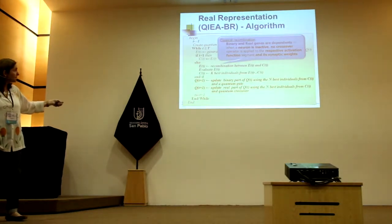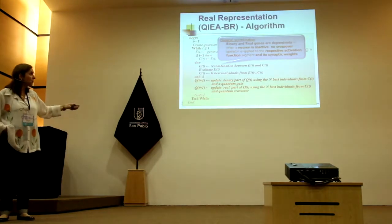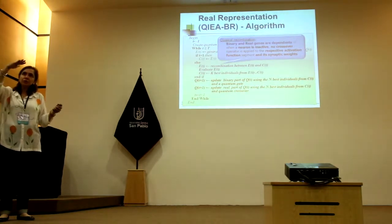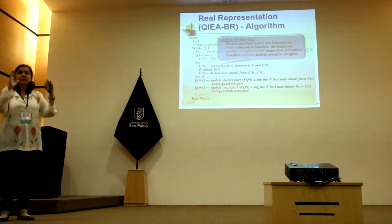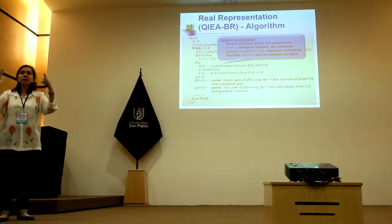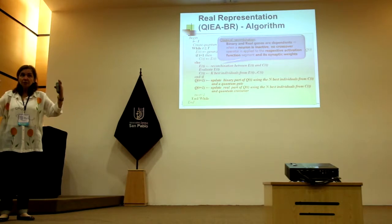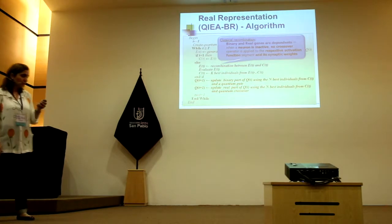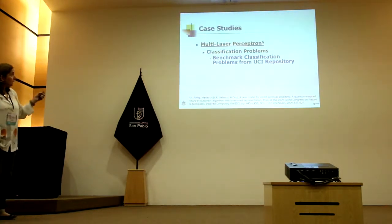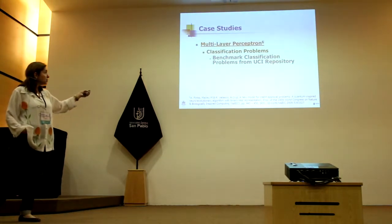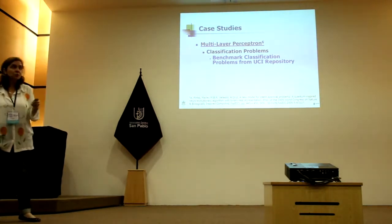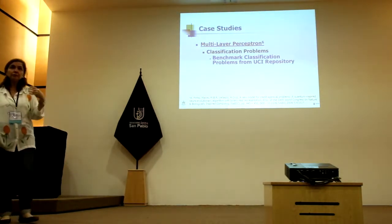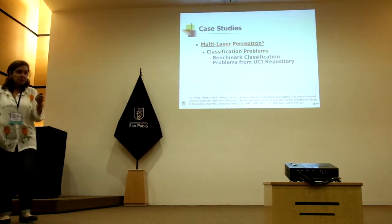For updating, the binary part uses the rotation operator that moves the vector toward zero or one. The real part uses the idea of shrinking or enhancing the width of the distribution and shifting it toward the best classical solution. We used benchmarks from the UCI repository to see if the results from the evolutionary process were competitive with other models.